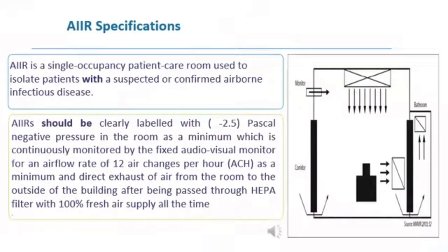In infection prevention and control practice, we have a specific recommendation for the negative pressure room or airborne infection isolation room. AIR is a single room occupancy patient care room used to isolate a patient with a suspected or confirmed airborne infectious disease. AIR should be clearly labeled with a minus 2.5 Pascal negative pressure as a minimum, continuously monitored by a fixed audiovisual monitor, with an airflow rate of 12 air changes per hour as a minimum, and direct exhaust of air from the room to the outside of the building after being passed through a HEPA filter, with 100% fresh air supply at all times.